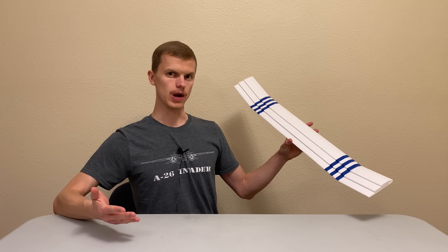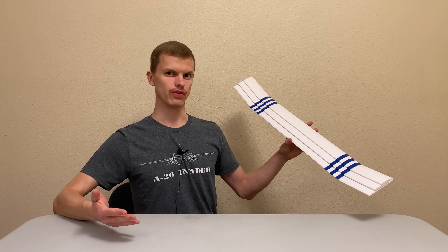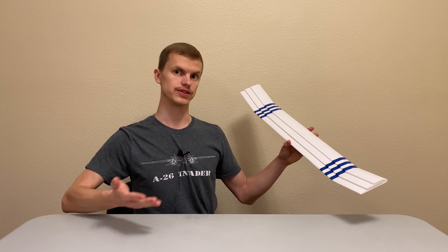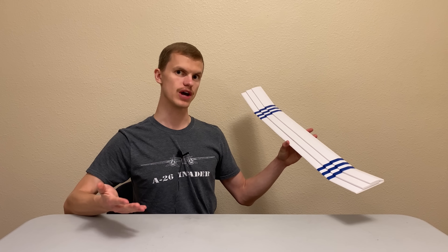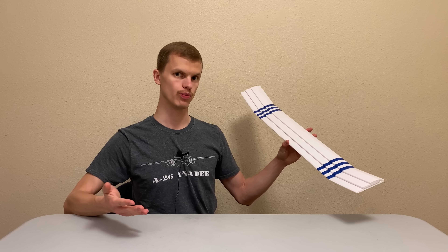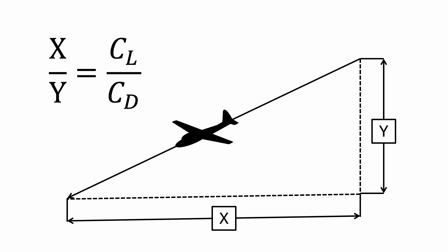So why are we building airplane wings that look like stairs? To understand how we got to this point, we need to back up a little bit. In our video about basic glider physics, we learned that the ratio of the horizontal distance a glider travels to the vertical distance it travels is equal to the ratio of the lift coefficient to the drag coefficient.